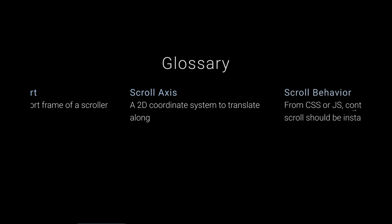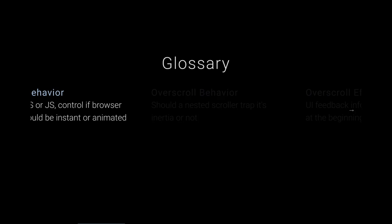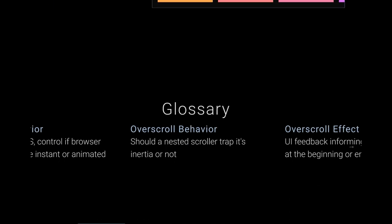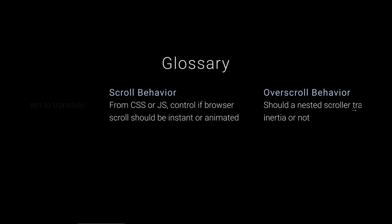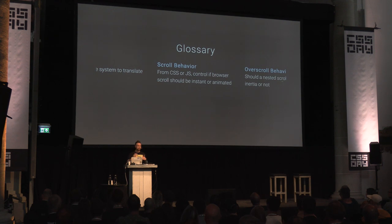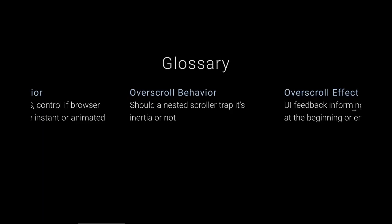'Scroll behavior' is CSS or JavaScript controlling whether the browser should instantly go to a new destination or smoothly transition there. There are cases for both — for reduced motion you want instant snapping since the user isn't controlling the motion, or you can use snapping to create an illusion. Then there's 'overscroll behavior': should a nested scroller trap its inertia or not?